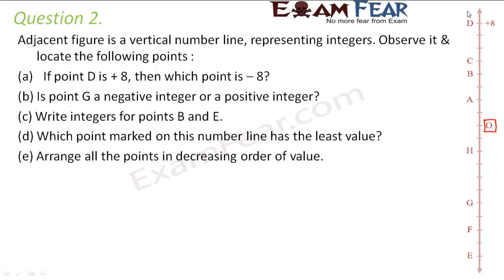The first question: if point D is plus eight, which point is minus eight? Point D is plus eight, so counting eight points above the origin gives plus eight. Counting eight points below the origin gives minus eight — that is point F. So the answer is F.